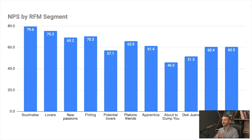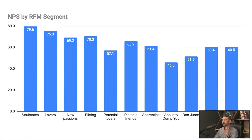If you segment the NPS by the RFM, you will have some surprises. In this example, you can see that the NPS goes all the way from 46, which is given by the customer segment called the About to Dump You — so customers which are churning — and all the way up to 79.6, which is given by the best customers that this company has, which are the soulmates.